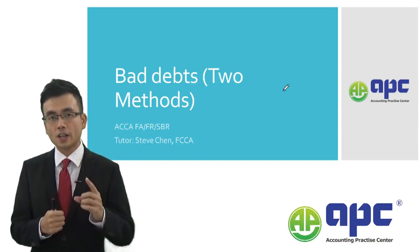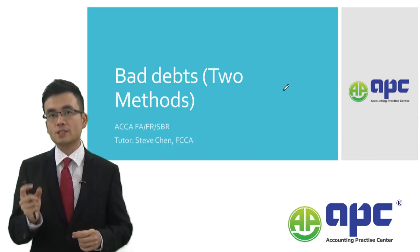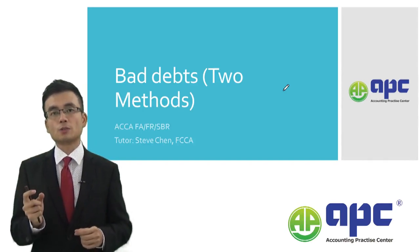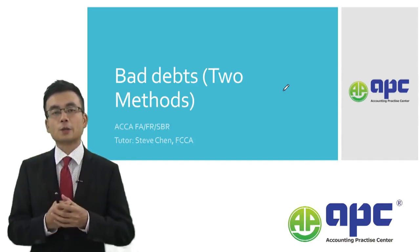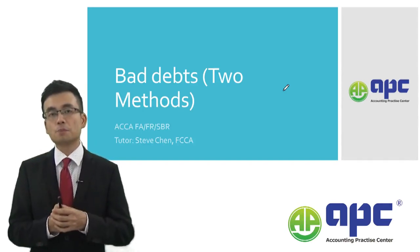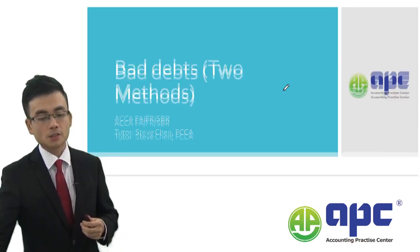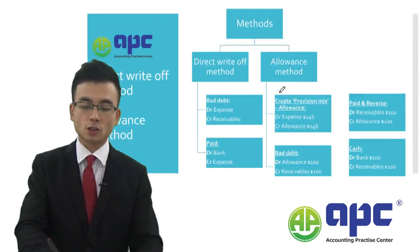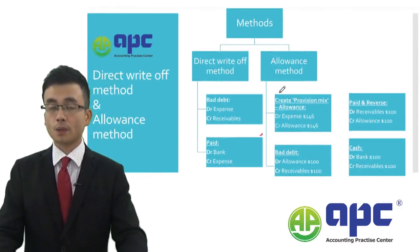We are looking at this from the trade receivables point of view — how much value should be reduced. In our ACCA syllabus, only the direct write-off method is required.